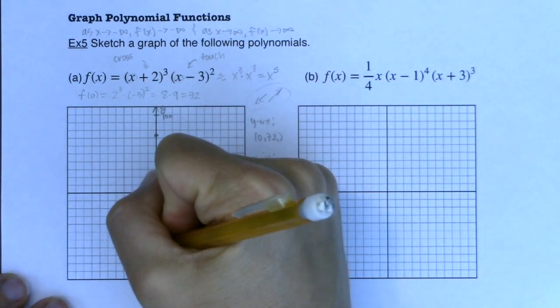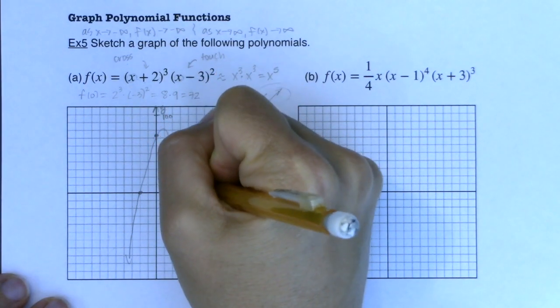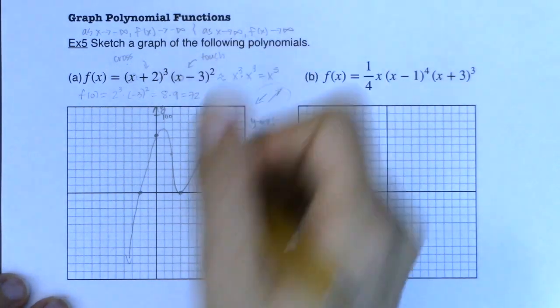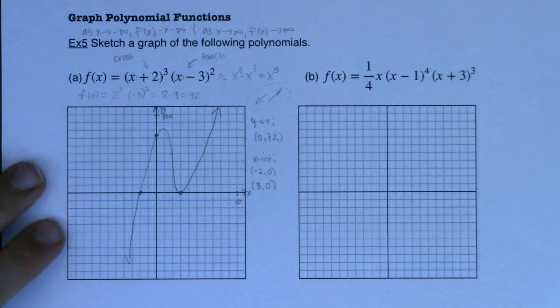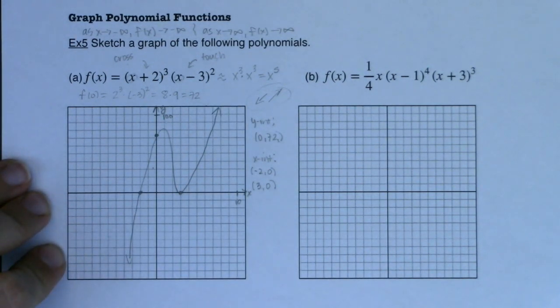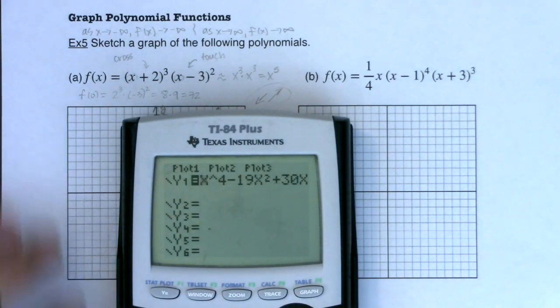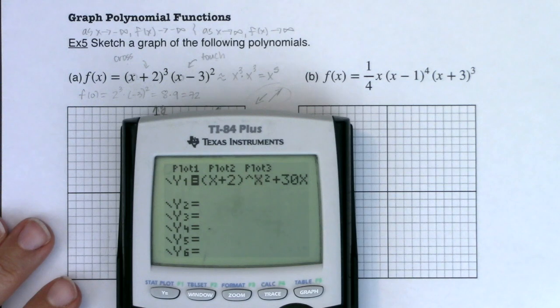The other thing I'm seeing are my x-intercepts. They will occur whenever I have a factor that zeroes out. When does x plus 2 zero out? It zeroes out at negative 2, 0. When does x minus 3 zero out? It zeroes out at 3, 0. So I have some x-intercepts, and I want you to take note of their multiplicities. This one is odd. This one is even. So what that means is I should cross the x-axis at negative 2, but I should touch the x-axis at 3.